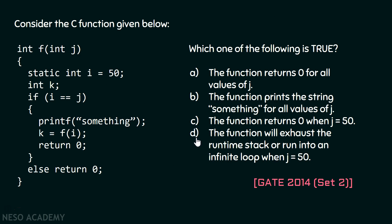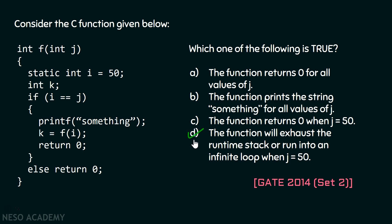We are left with just one option which says the function will exhaust the runtime stack or run into an infinite loop when j equals 50. This is correct — this is what we have observed. When j equals 50, this function will go into an infinite loop and we will receive the error stack overflow, because the runtime stack will exhaust. Therefore, we can clearly say option D is the correct option.